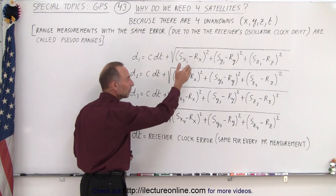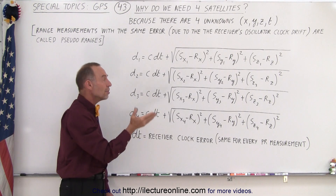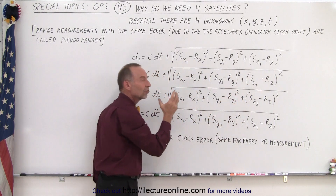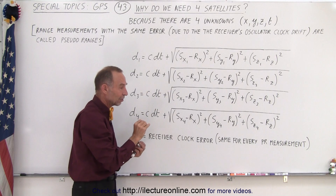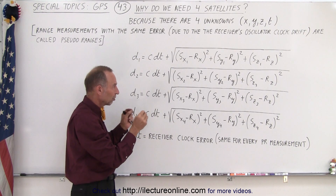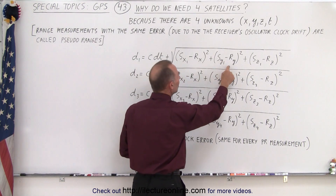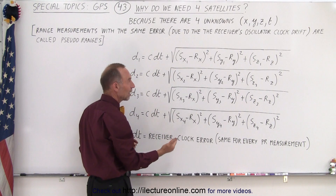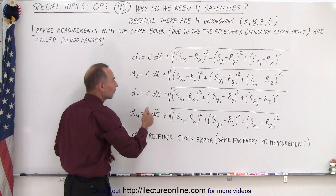We know those satellite positions because we get them from the orbital parameters, which means the only unknowns we have are the X, Y, and Z of the receiver. We know the position of the satellites because we have very accurate and up-to-date orbital parameters. So once we know the position of each satellite at a particular moment in time, the unknowns become the receiver's X, Y, and Z — which are the same for all four equations — and the clock drift.